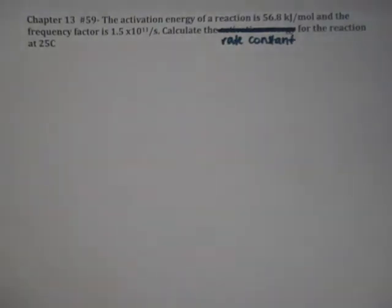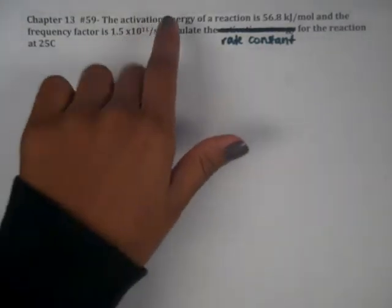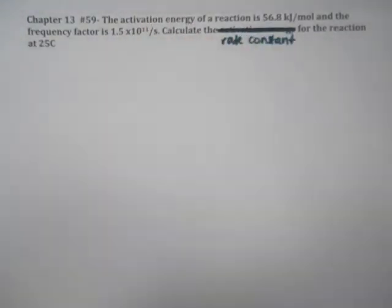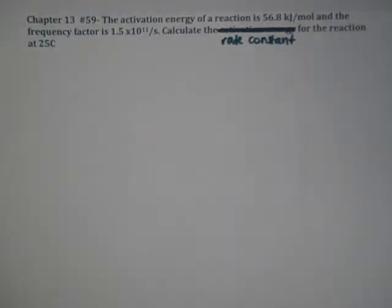This is problem number 59 from the back of chapter 13, dealing with the collision model and one of the big formulas associated with it. We have the activation energy of a reaction is 56.8 kilojoules per mole, and the frequency factor is 1.5 times 10 to the 11th per second. We need to calculate the rate constant at 25 degrees Celsius.